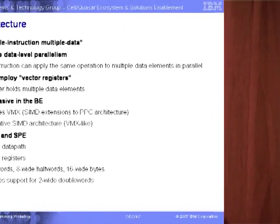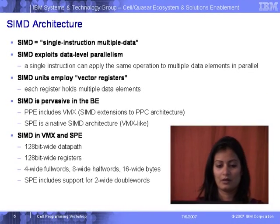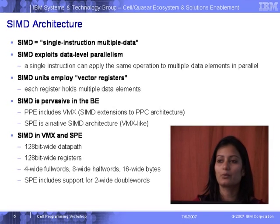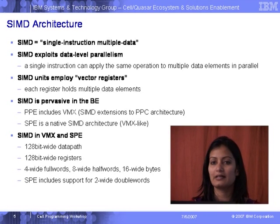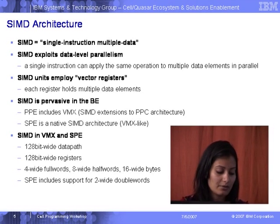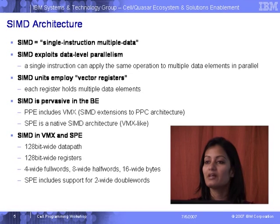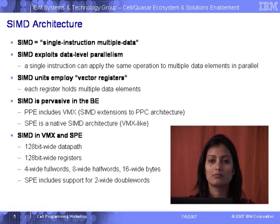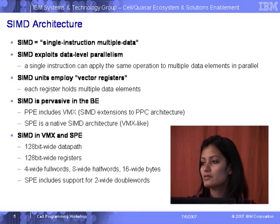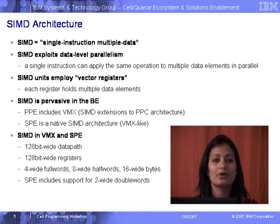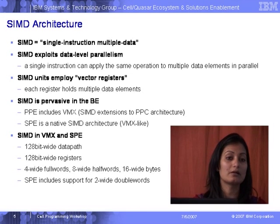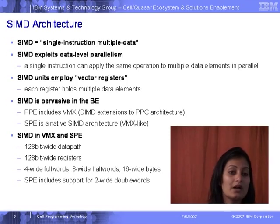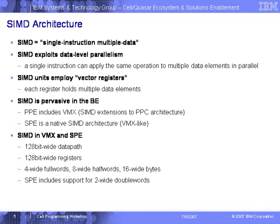Via SIMD, we are exploiting data-level parallelism. By operating on vectors, we're not doing so many loads. For 16 characters — 16 bytes of data — we're not doing the load 16 times. We are operating on vectors, so we're only doing one load. That saves you 15 more cycles to go do something else.